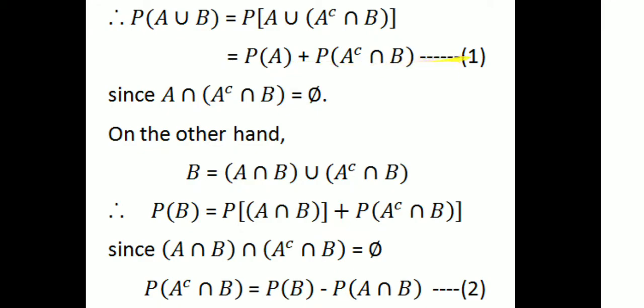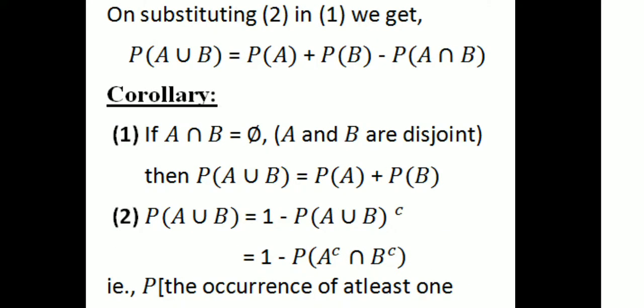Then substituting equation 2 into equation 1, we get: probability of A union B is equal to probability of A plus probability of B minus probability of A intersection B. This is the addition theorem of 2 events.